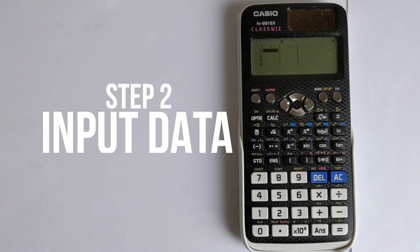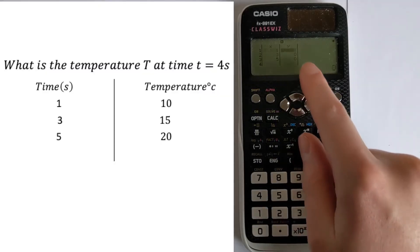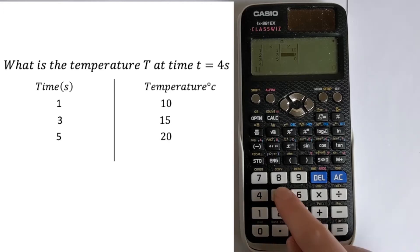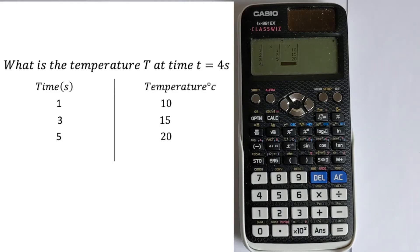We now need to enter the data, so we've got 1, then we've got 3, then we've got 5, and then we can go back up and override all these zeros with 10, 15, and then 20. So our x is referring to our time, and then y is referring to our temperature.